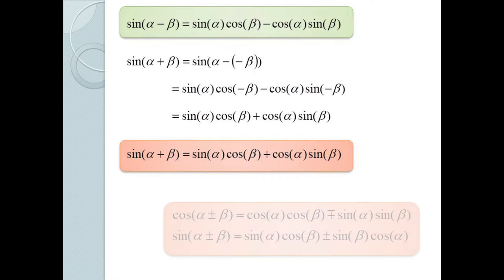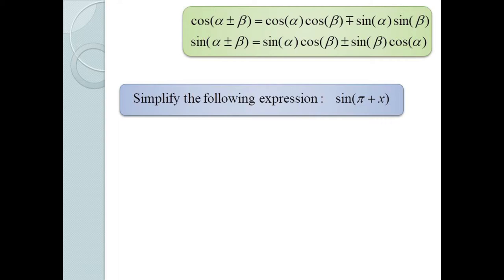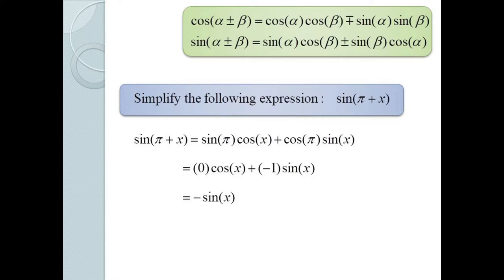So now we have our four basic formulas. Consider this example where we want to simplify the expression sin(π + x). We simply use the sine sum formula to expand this to sin π · cos x + cos π · sin x. But sin π equals 0 and cos π equals −1, so we're just left with −sin x.